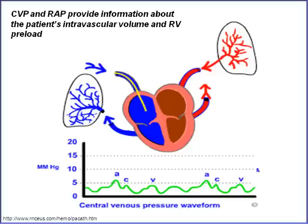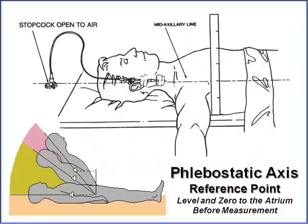If a patient were to have a Swan-Ganz catheter, which we're not doing here in the ED, the catheter tip recording portion would be in the right atrium. We're doing central line monitoring, and the central line tip is going to be at the opening of the right atrium, in the superior vena cava. What those are measures of is the patient's intravascular volume or right ventricular preload.